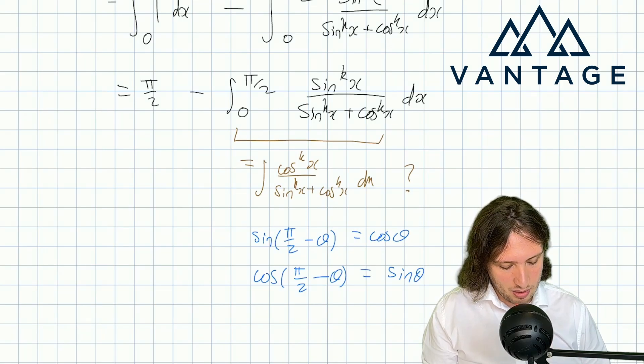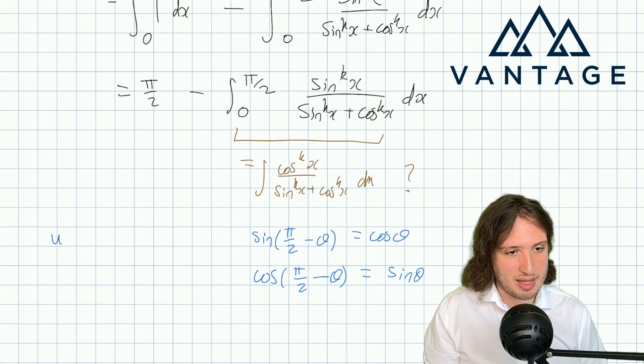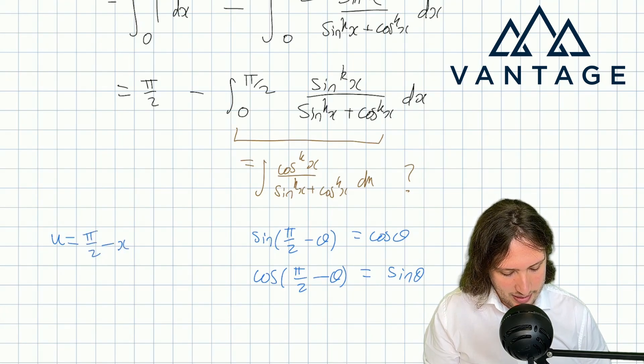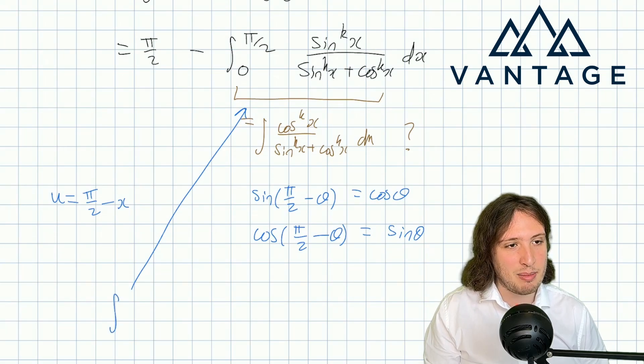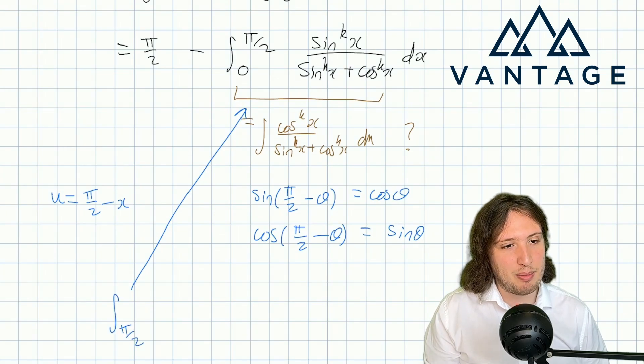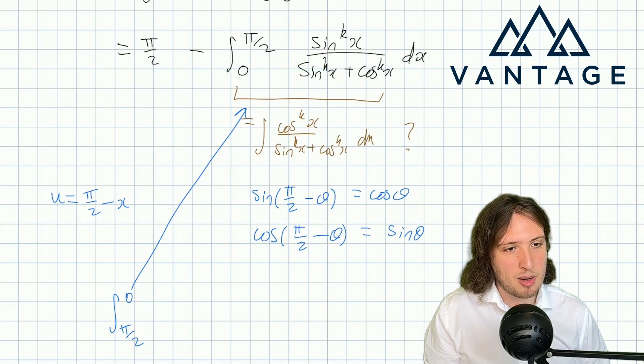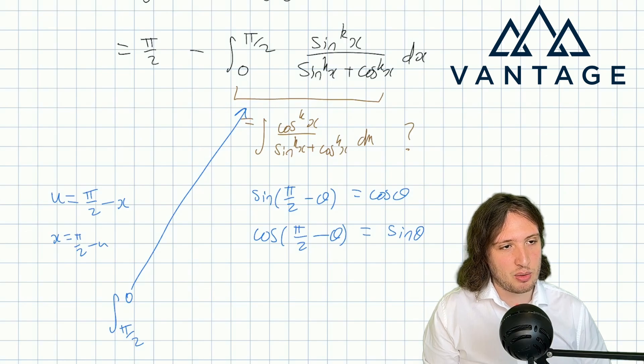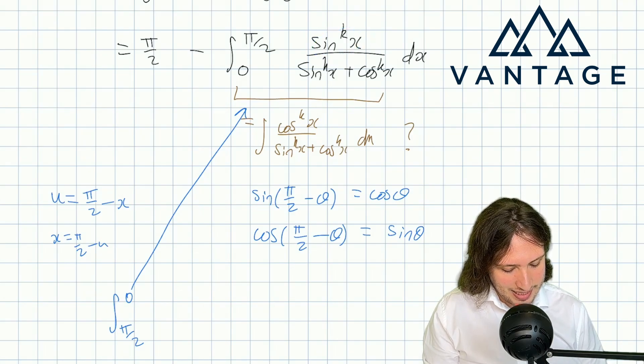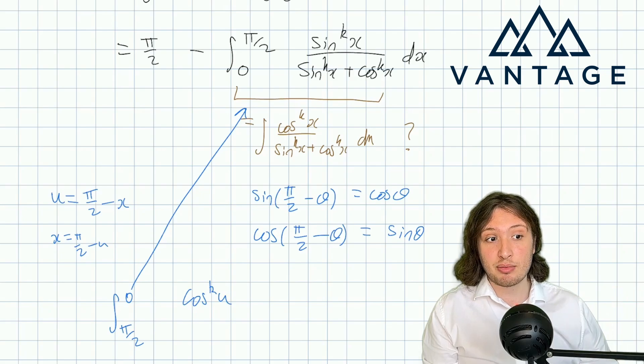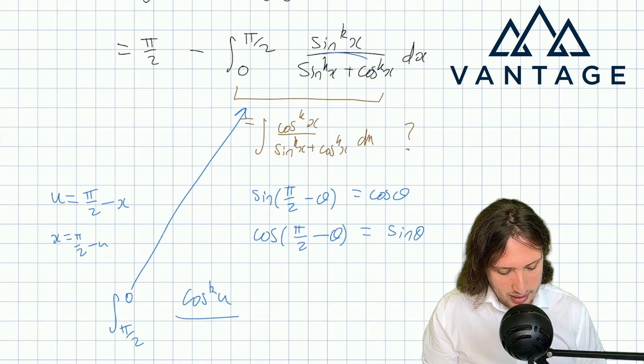So what if, motivated by that, I now make the substitution u equals π/2 minus x? Because then this guy, what happens? Well, the limits swap: π/2 minus 0 is π/2, π/2 minus π/2 is 0. By design, because this means that x is also π/2 minus u, sine to the k x is actually cos to the k u, so that was the whole motivation for the substitution—we've implemented our swap.